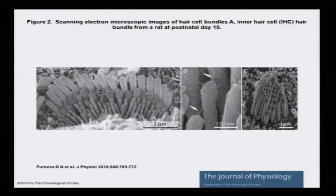Looking at this picture at a further resolution, the dimensions of the individual cells give you an idea of how small these structures are — sensing different frequencies. This reference by Furness D.N. in the Journal of Physiology, year 2010, issue 588, shows scanning electron microscopic images of hair cell bundles with inner hair cells (IHC) from rat post-natal day ten. These are the nano-machines of the body which help us decipher a wide range of signals from sound, light, smell, taste, and touch.